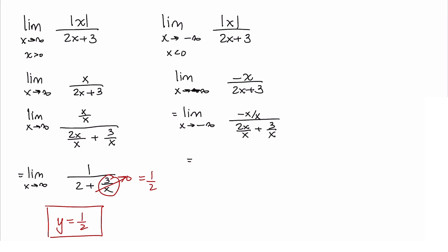There's some simplification that can happen here. We have the limit as x approaches negative infinity of negative 1 over 2 plus 3 over x.